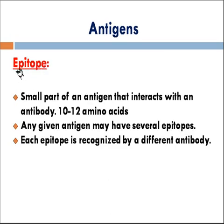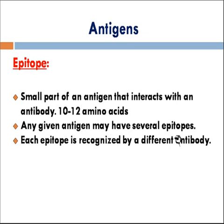Another thing which is very important in the case of antigens is the epitope. Epitopes are actually the small regions on the antigens which interact with an antibody molecule. This is the major site on the antigen which actually binds to the antibody molecules. There are around 10 to 12 amino acids which constitute an epitope, and any given antigen can have several epitopes, meaning different antibodies can bind to a single antigen. Each epitope is recognized by a different antibody. The epitope is around 10 to 12 amino acids long and is the site which actually binds to the antibody molecule.